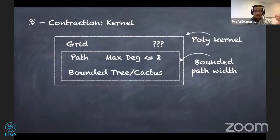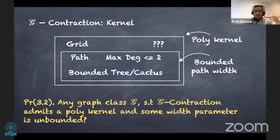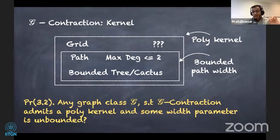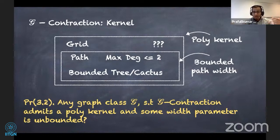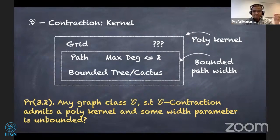With this limited list of graph contraction problems for which polynomial kernels are admitted, I want to mention this open problem: is there any other graph class C such that C-contraction admits a polynomial kernel and some width parameter for C is unbounded? For the grid, we have no restriction on the final size of the grid, hence it can have arbitrarily large pathwidth or treewidth.